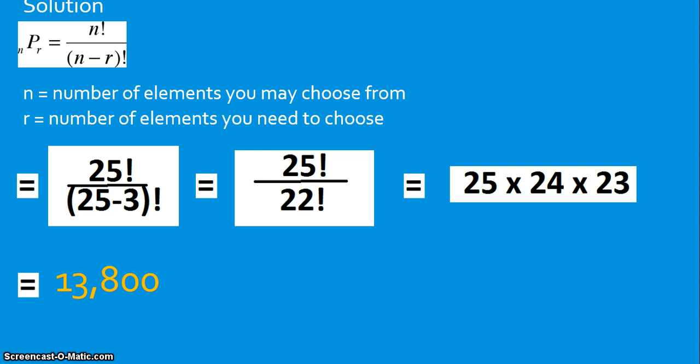And you get 13,800 groups of 3, if we're including the repetitions. And what I mean by that is when we say the order matters, right? 13,800 ways you can call a group of 3 students in a class of 25. And that's the permutation formula.